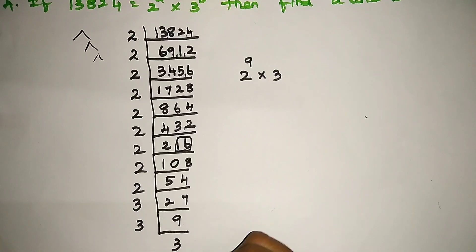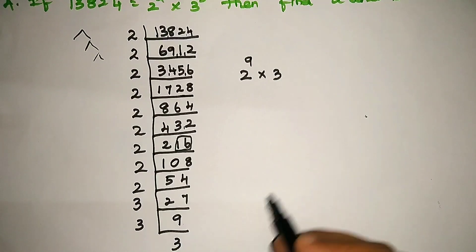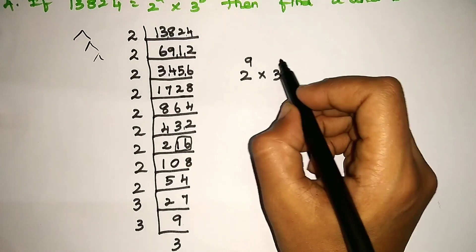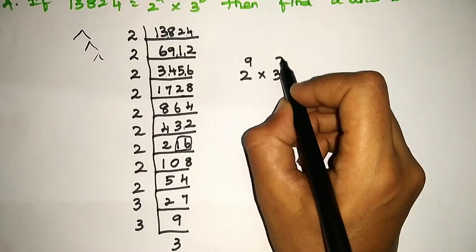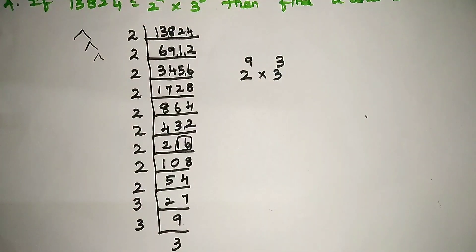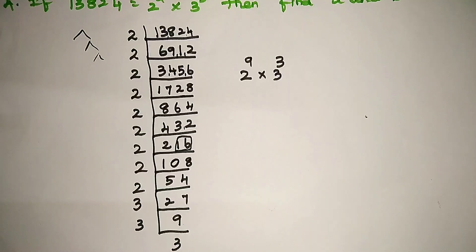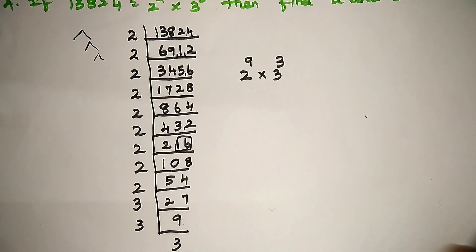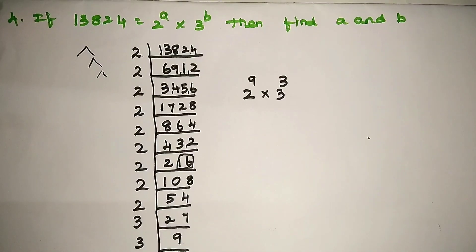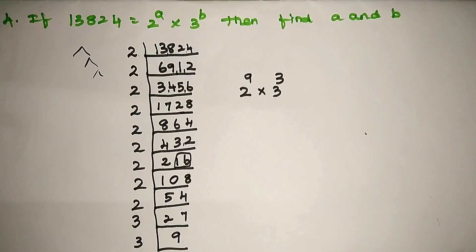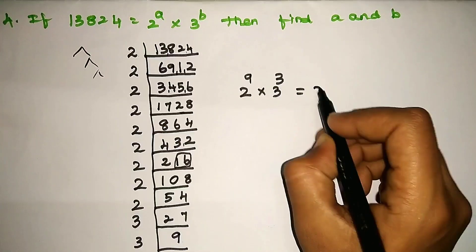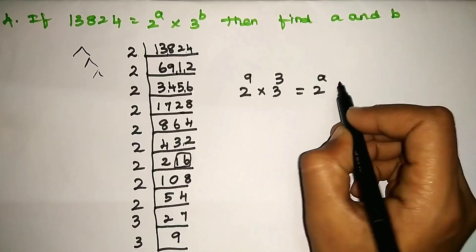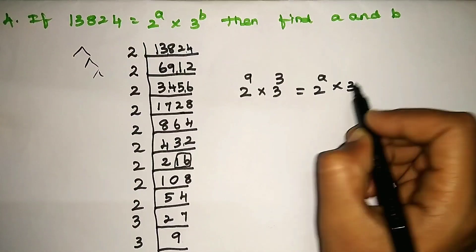How many times do we count the 3s? 1, 2, 3 — that is 3 times. So 3 power 3. Therefore, 13824 equals 2 power 9 into 3 power 3. Now let's compare this to the question: 2 power A into 3 power B.